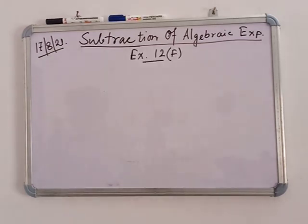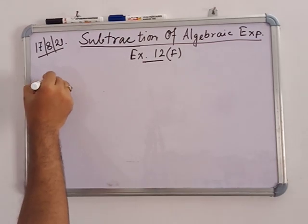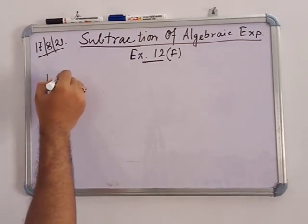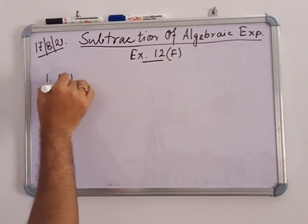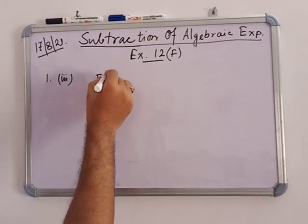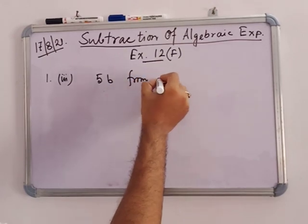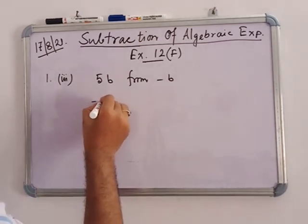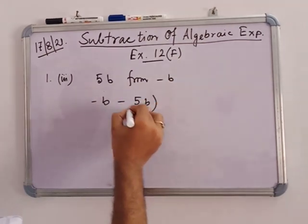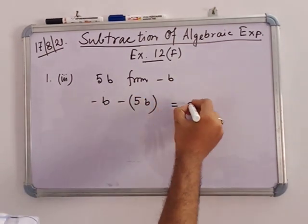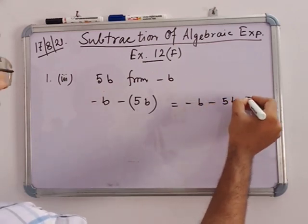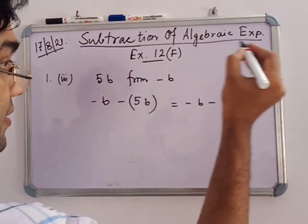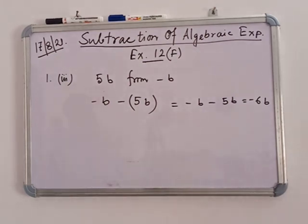In exercise 12f, number 1a: subtract 5b from minus b. That means minus b minus 5b, which equals minus 6b. So minus 6b is the answer.